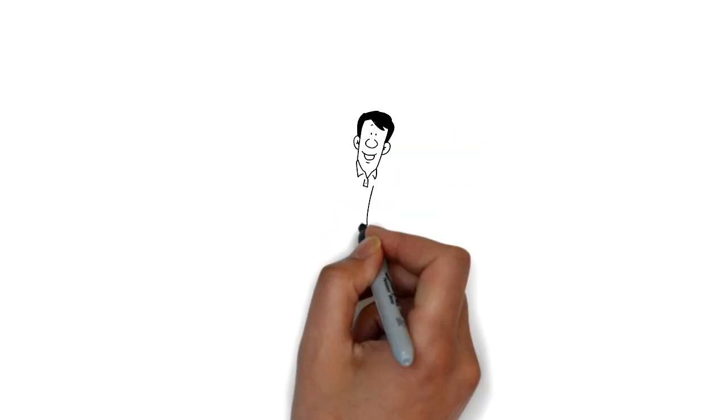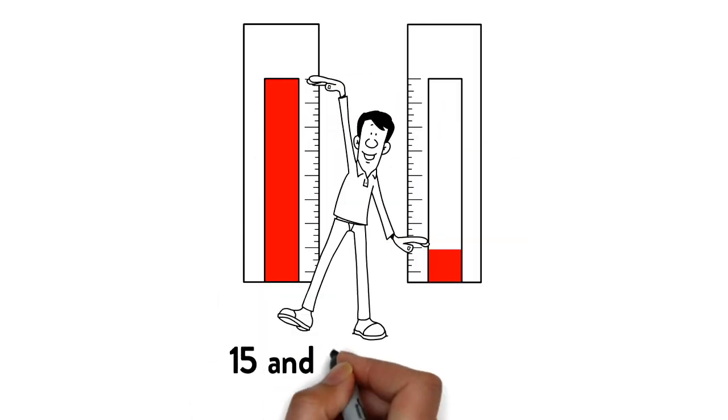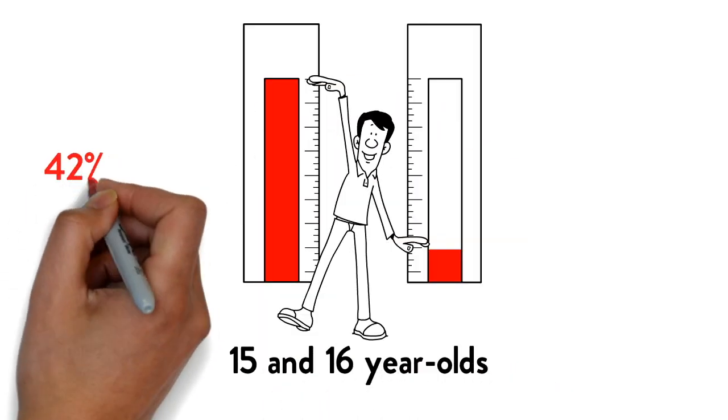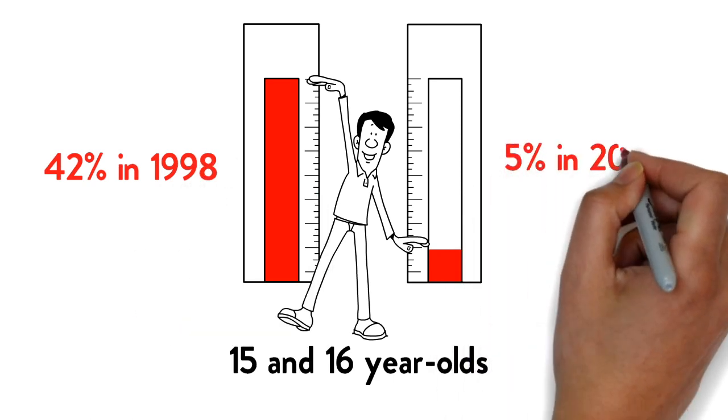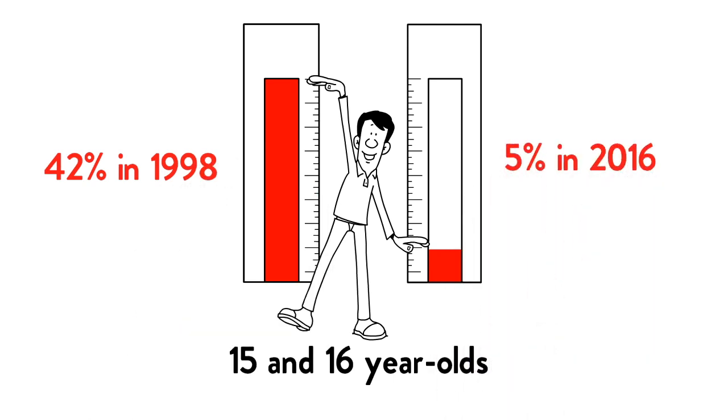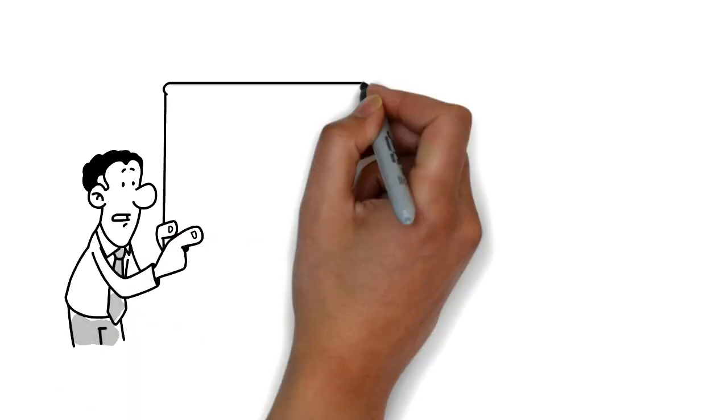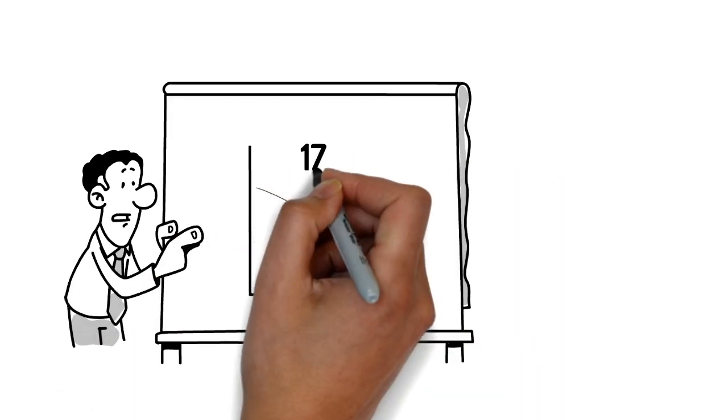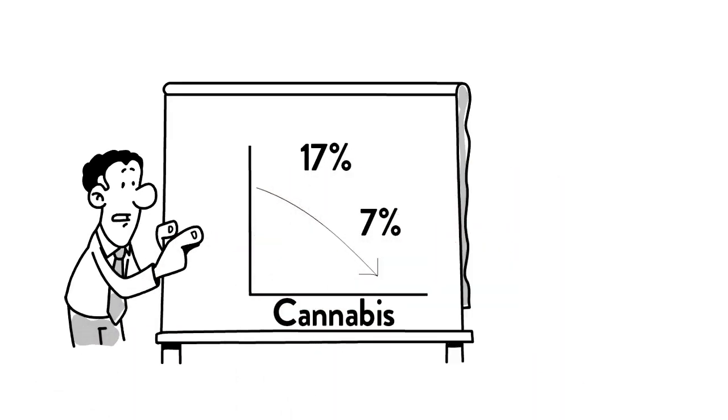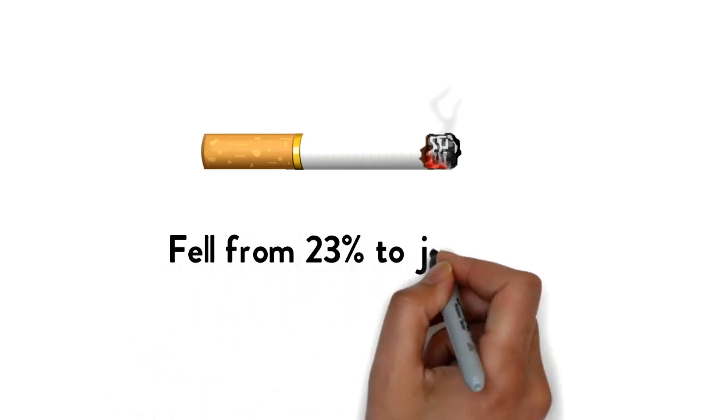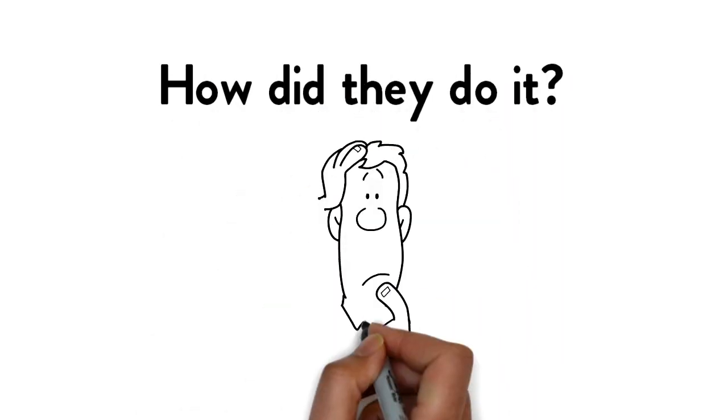The percentage of 15 and 16 year olds who had been drunk in the previous month went from 42% in 1998 to 5% in 2016. The percentage who have ever used cannabis is down from 17% to 7%. Those smoking cigarettes every day fell from 23% to just 3%. How did they do it?